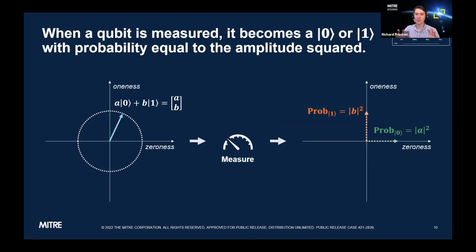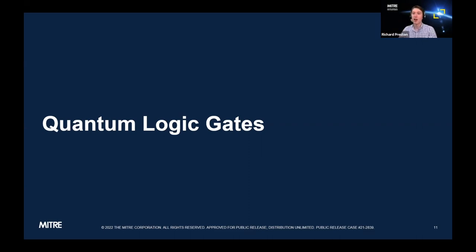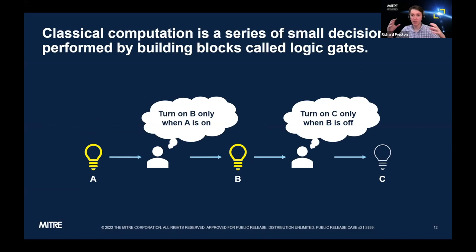Moving on to how we process quantum information. You may have seen the term logic gates in a classical context — this is fundamentally how we process all information today using digital logic gates. You can think of classical computation as a series of small decisions performed by these building blocks. A signal comes in, a gate makes a decision based on it, and outputs a new signal.